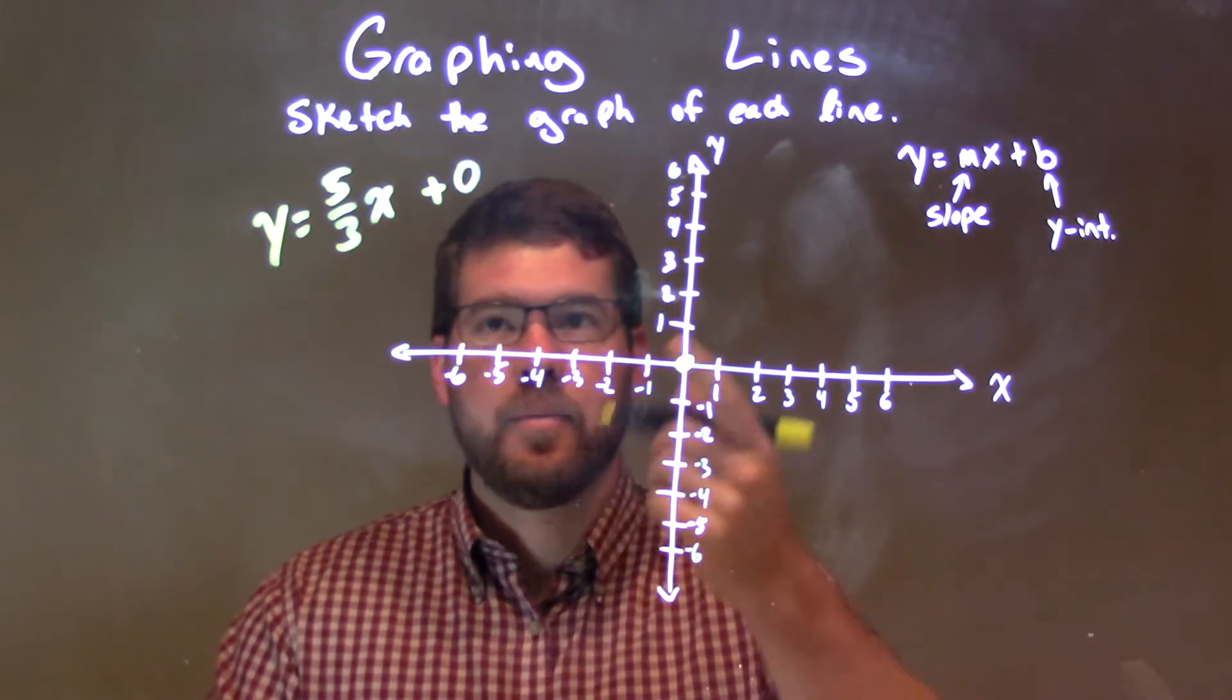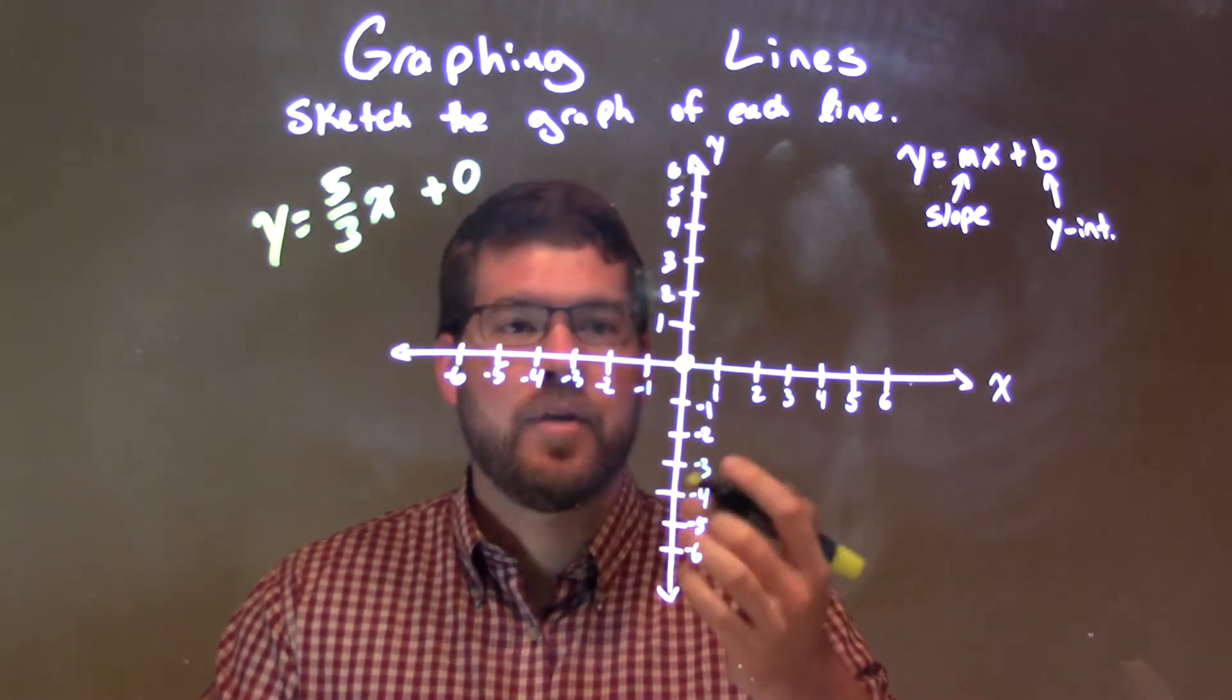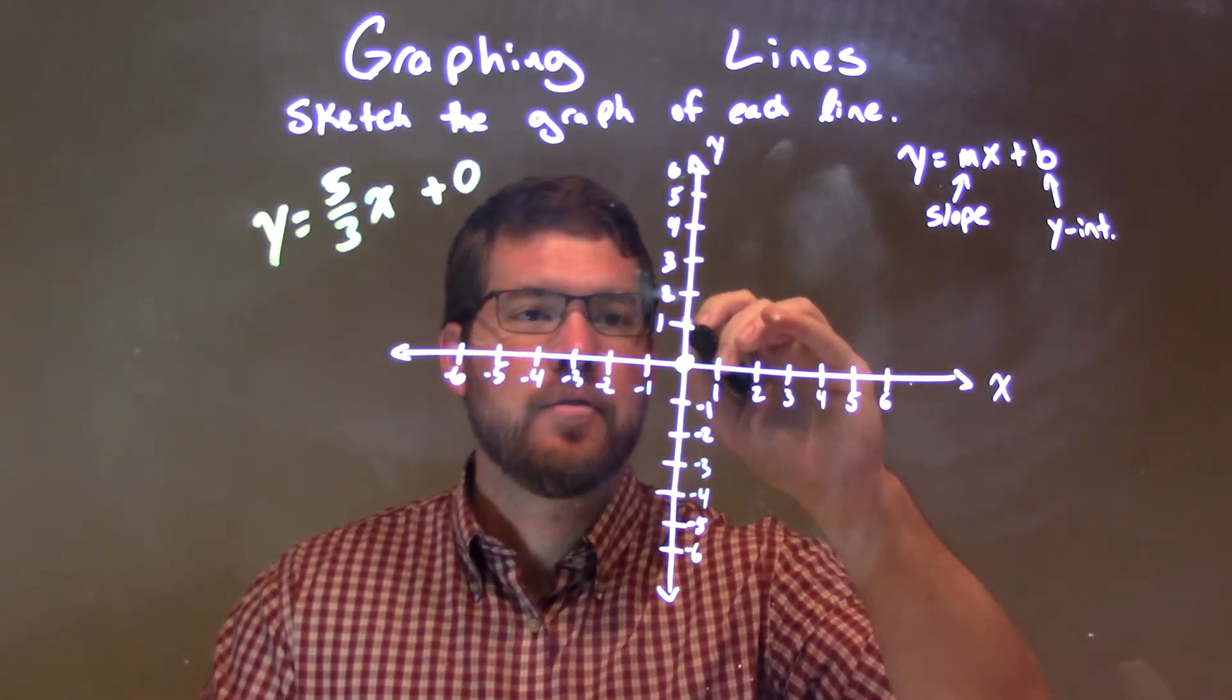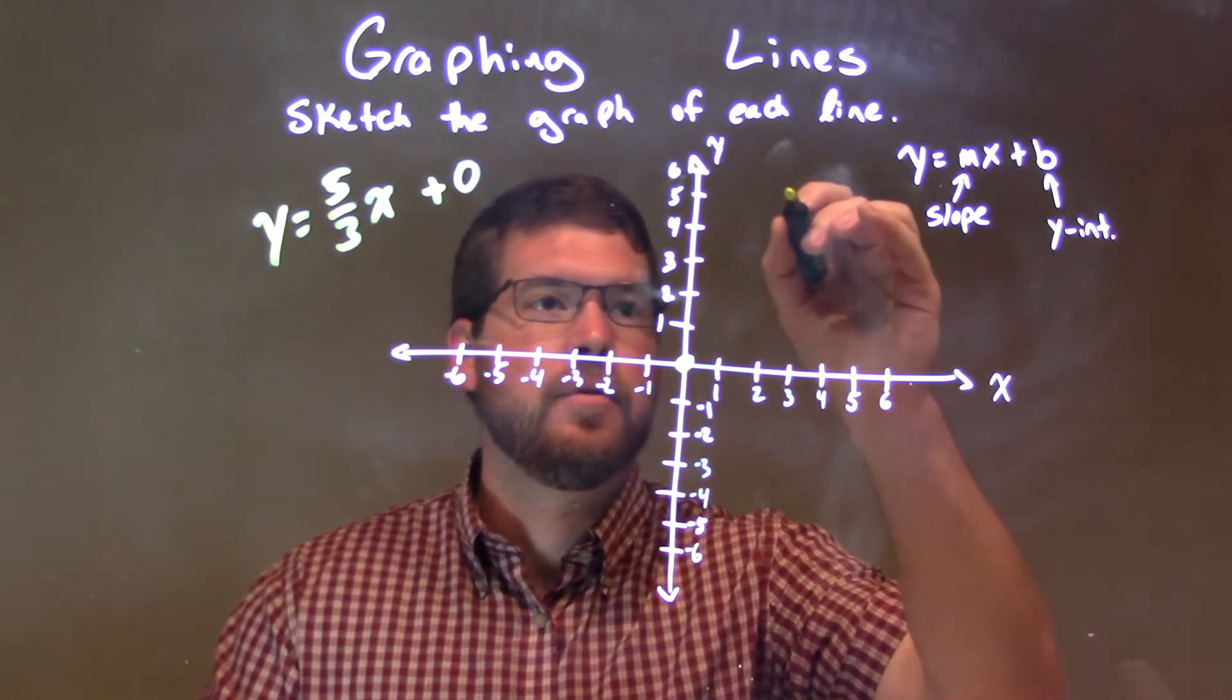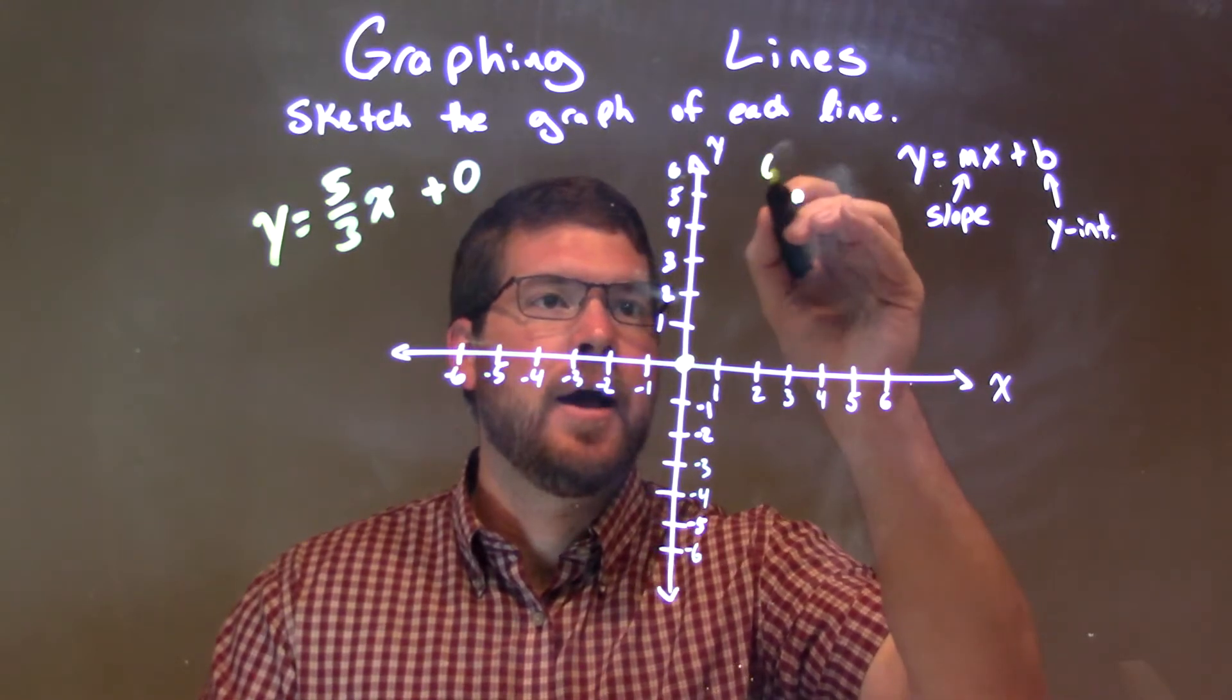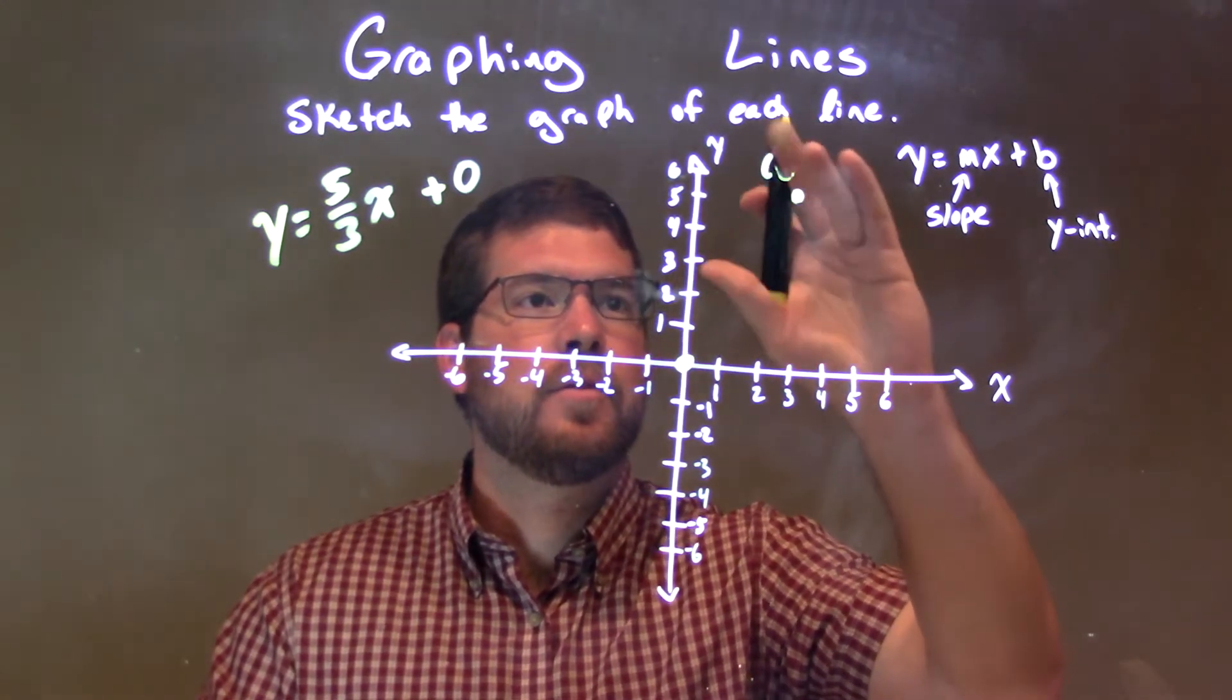So that's our y-intercept right there at 0, and now our slope is 5 thirds. Go up 5 units: 1, 2, 3, 4, 5. Go over 3: 1, 2, 3. So we have a point here at 3, 5.